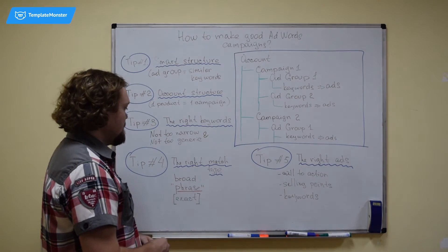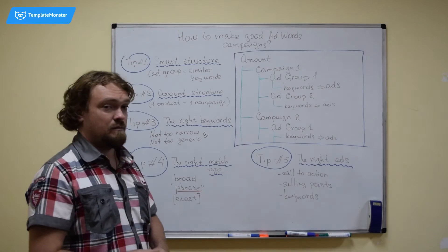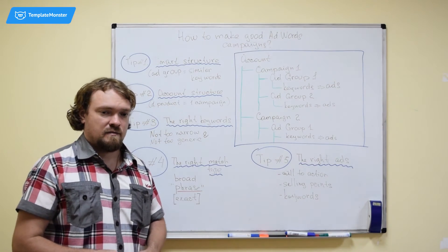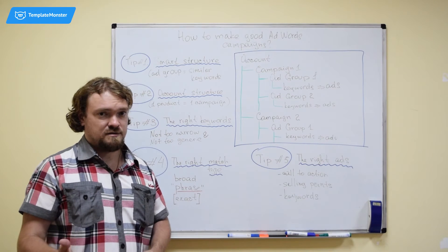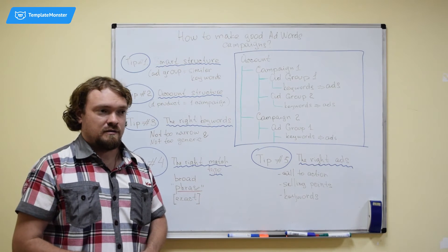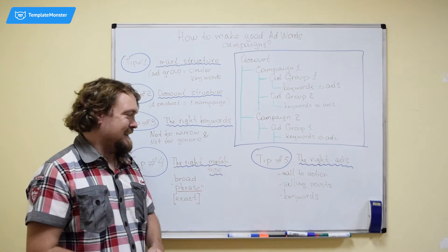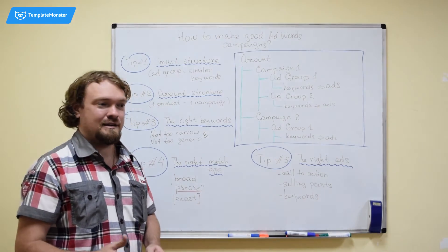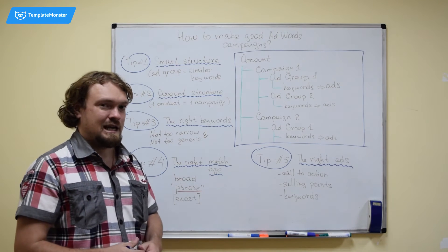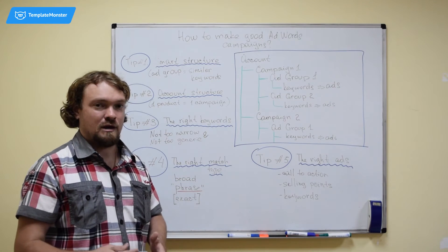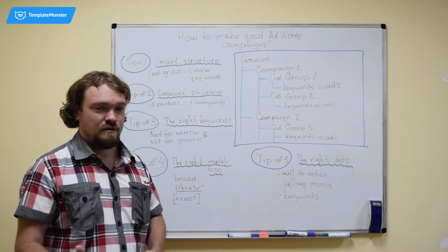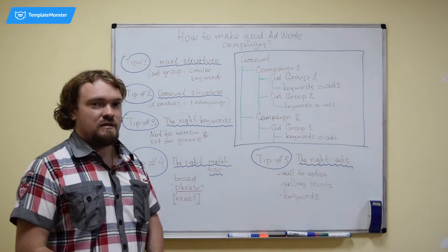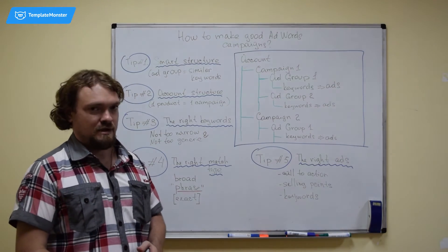The fourth tip is using the right match type. This is something that end users or business owners never use actually. Because they probably just don't know that it's possible. And they do not understand how valuable or how critical it is for their campaign success. There are three match types: the broad match type, the phrase match type, and the exact match type.